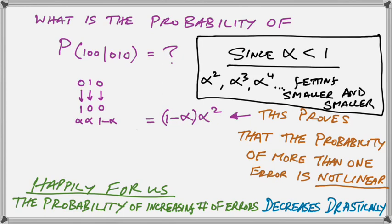It's decreasing drastically. So it becomes less and less and less likely that we will get more errors. And the alpha, which is the probability of getting just one error, is all we really have to look at. That number is really the most important thing that we're looking at.